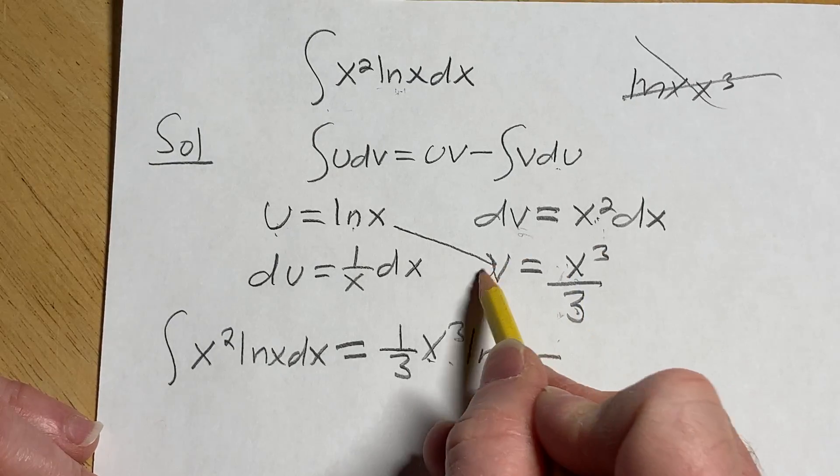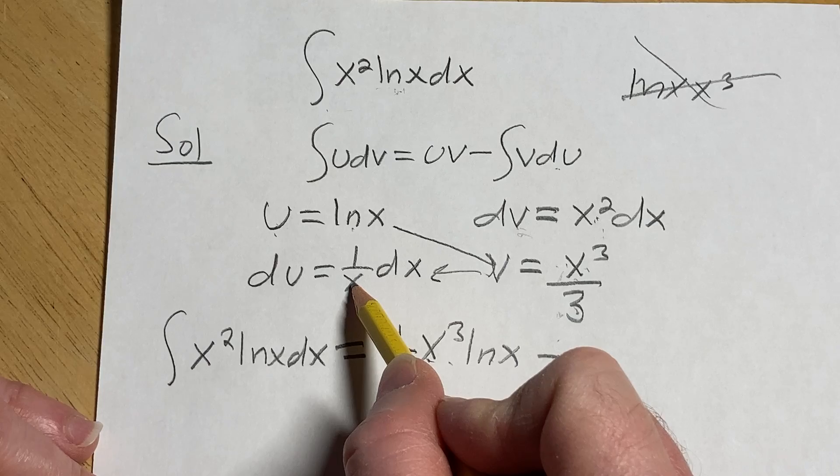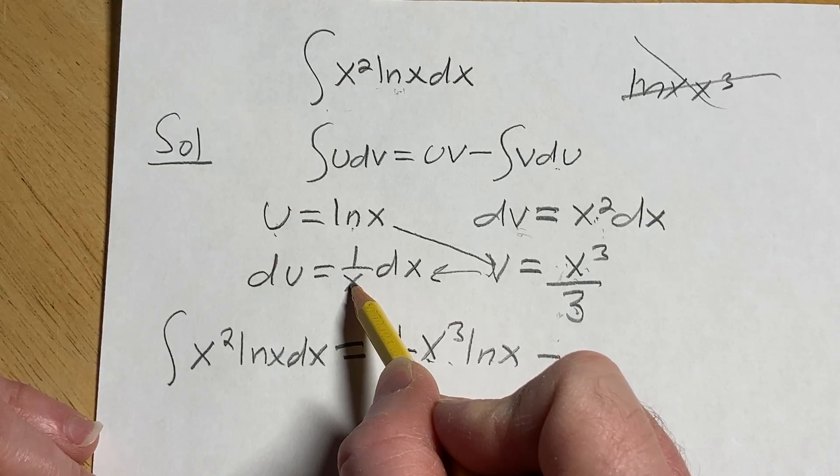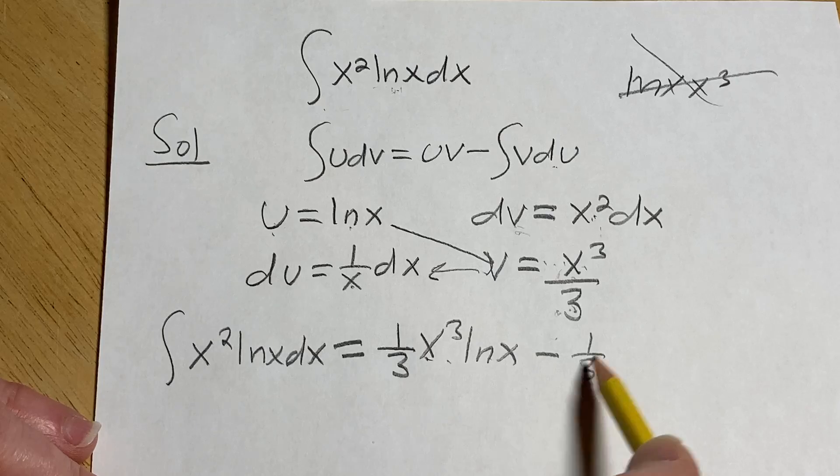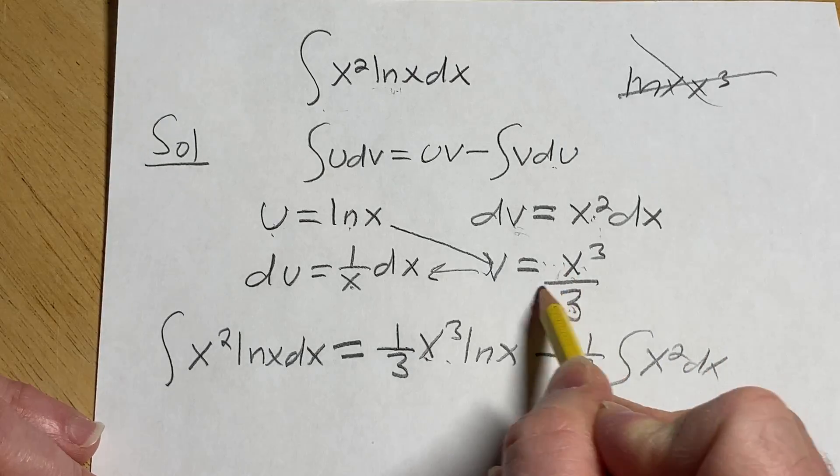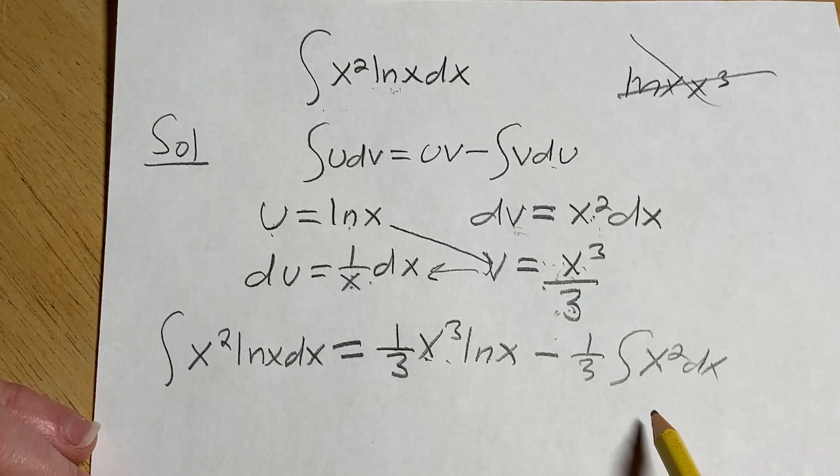Minus the integral of V times dU, so this times this. X cubed over x, what's going to happen here is that one of the x's is going to cancel so we're left with x squared. We can also pull out this 1/3, so we have x squared dx. That's V times dU, so this times this. Again we lose a copy of x and then I pulled out the 1/3.